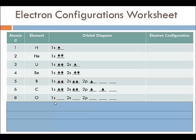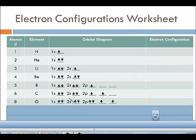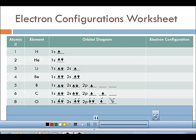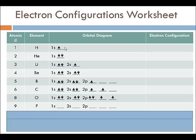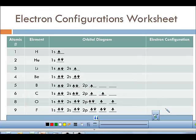We'll skip nitrogen and let you complete that one. For oxygen, which has eight electrons, we fill 1s, 2s, and then the three 2p orbitals — one electron each — and the eighth electron comes back to pair with the first 2p orbital. The electron configuration is 1s² 2s² 2p⁴. For fluorine, we just add one more down arrow to the 2p, giving 1s² 2s² 2p⁵.